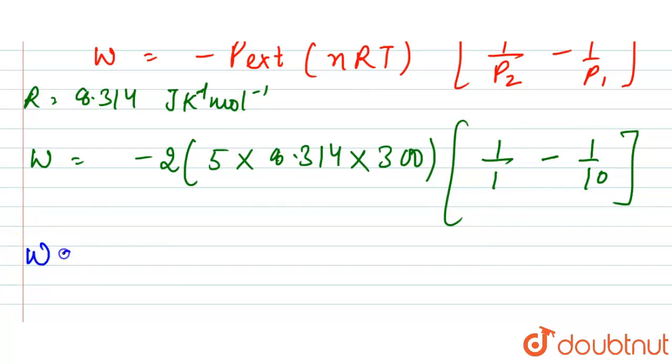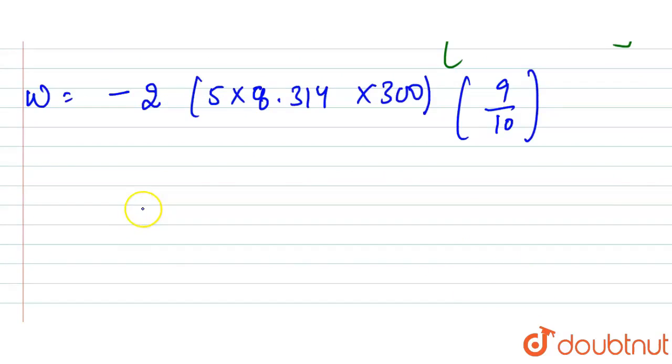When we solve this, our work done is minus 2 times 5 times 8.314 times 300, and here we will have 9 upon 10. So here after solving this, the work done value is 22447.8 joules.